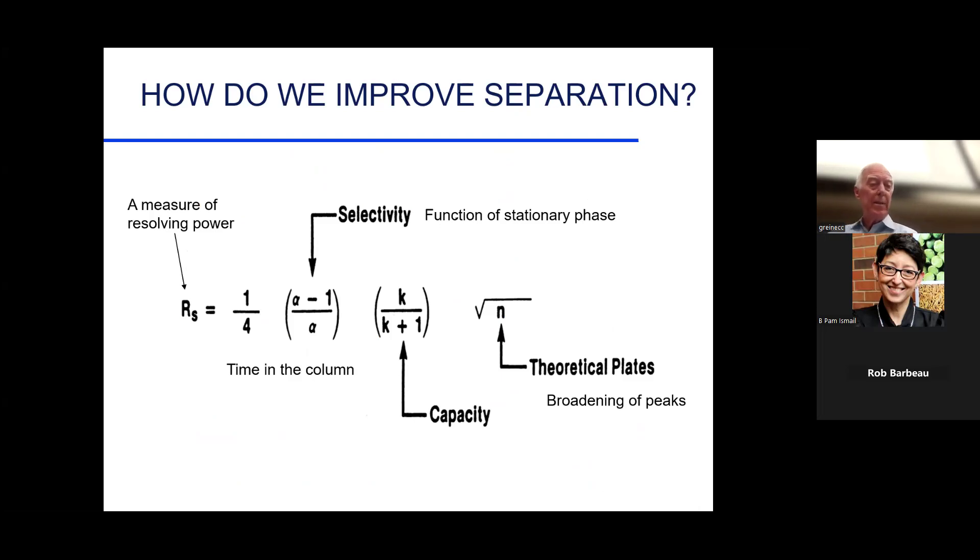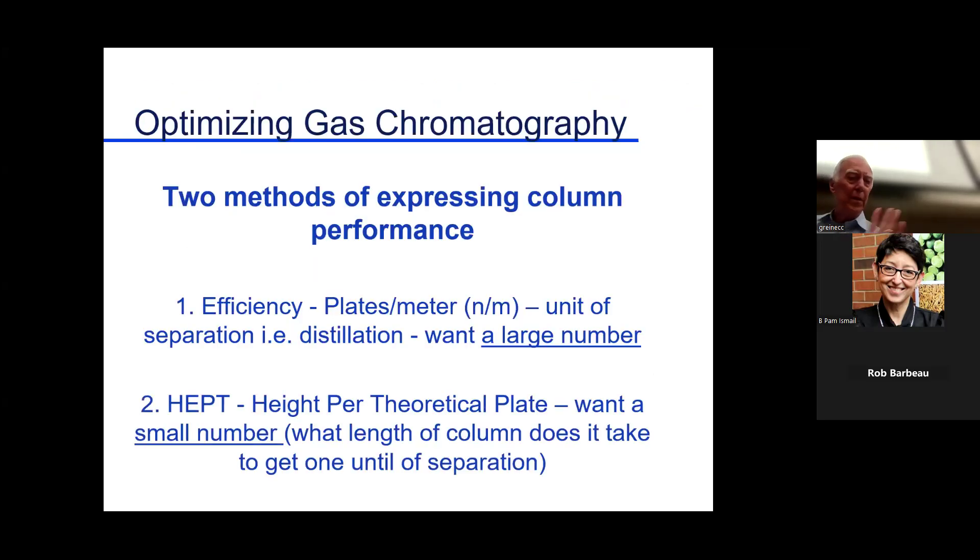Improving separation. What factors give you resolution? How do you control them? We have selectivity. R is a measure of resolving power, our term for resolution. That's equal to various factors. This is selectivity, that relates to the phase itself, the selective nature of the phase. This term comes from the stationary phase interaction. This relates to the broadening of peaks in the system. How do we make this better? We work to improve all three of these terms to get better separation in the gas chromatograph.